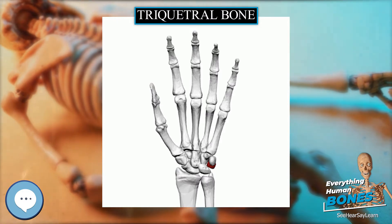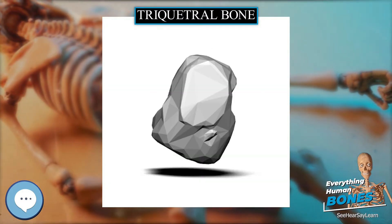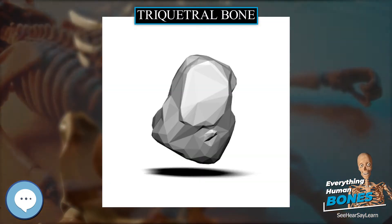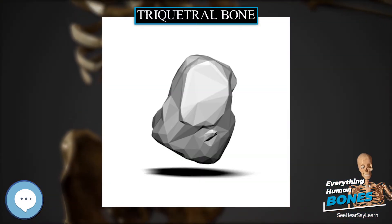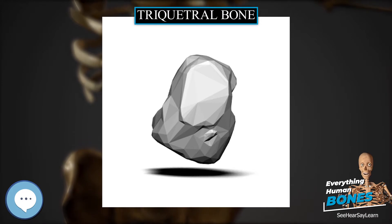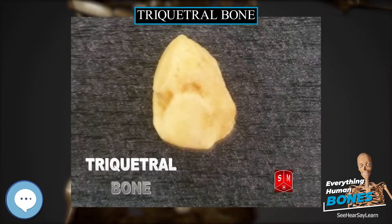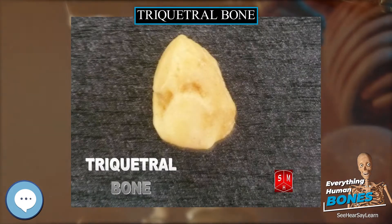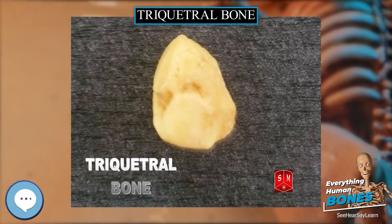It is on the ulnar side of the hand, but does not articulate with the ulna. It connects with the pisiform, hamate, and lunate bones. It is the third most commonly fractured carpal bone.